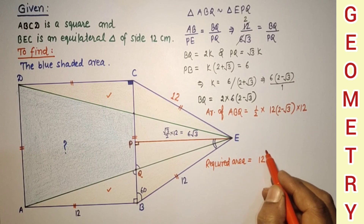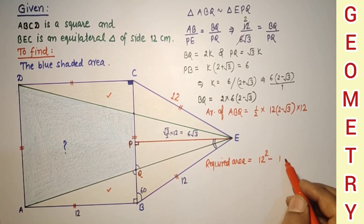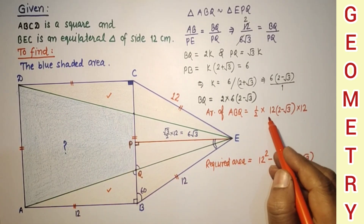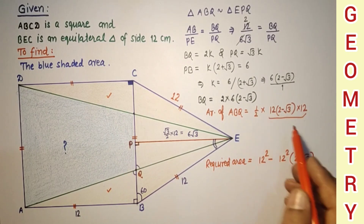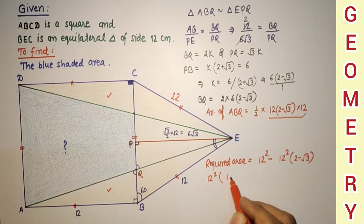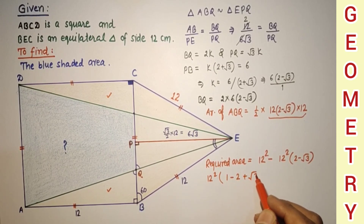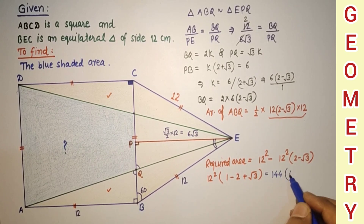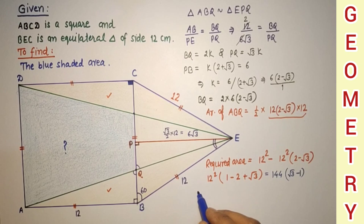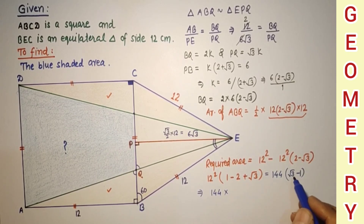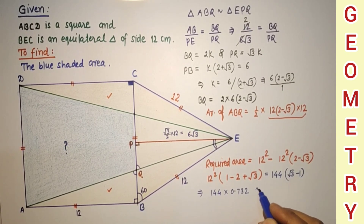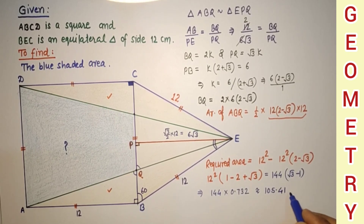The required area equals 12 squared minus 2 times half times 12 times 12(2 minus root 3), which simplifies to 144 times (1 minus (2 minus root 3)), giving 144 times (root 3 minus 1). Using root 3 equals 1.732, this is 144 times 0.732, which is approximately 105.41 square centimeters. This is the answer.